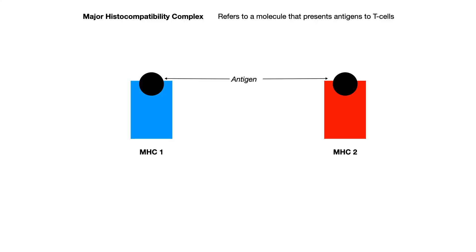Let's start by talking about major histocompatibility complex. When you see MHC, sometimes written as MHC1 and MHC2, that MHC acronym stands for major histocompatibility complex. The short and sweet of this is that it is a molecule that presents antigens to T cells to activate them as part of our immune system. So there's MHC1 and MHC2.